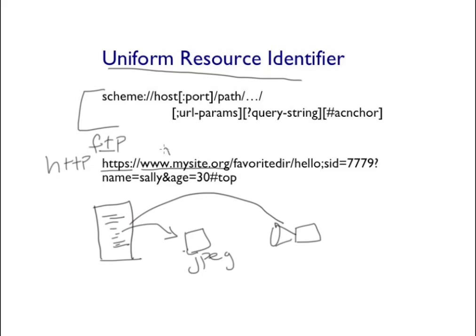Following the protocol is the host name — this is the fully qualified host name, or it can be an IP address, to identify the host on which the resource is located. After this, we have a forward slash and the path within the document root of the web server where the resource lies.